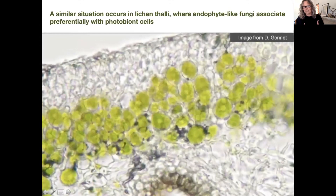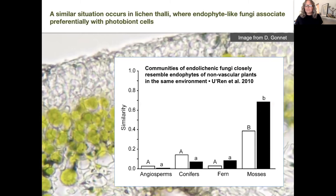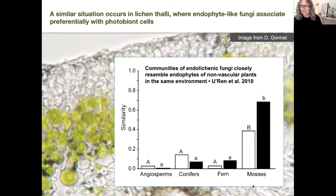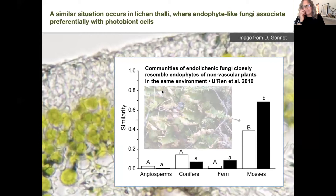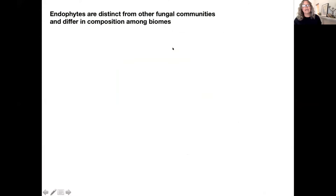A similar situation occurs with lichen thalli — endophyte-like fungi associate preferentially with photobiont cells. Looking at a cross-section of a lichen thallus and micro-dissecting the photobiont layer, we get a large number of fungi phylogenetically and functionally similar to fungal endophytes of plants. Jana Uren did really nice work showing that even in the same habitat, endophytes in lichens can be quite distinct from those in angiosperms, conifers, or ferns, but have high community similarity to those in nonvascular plants like mosses. There's something about growing in a nonvascular host that unites those fungi.